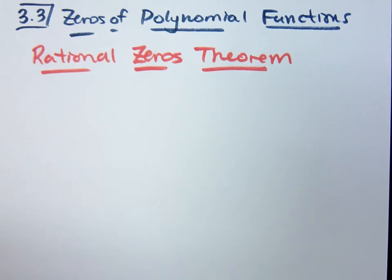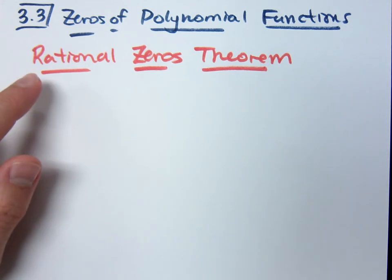When you see the word rational, it means we're talking about fractions. So this is a theorem that will help you determine the possible zeros of a function that are rational, which means I'm going to help you figure out the possibilities for your zeros that can be written as a fraction.